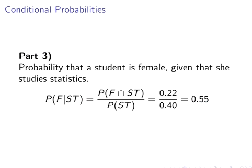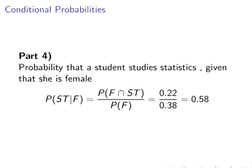Probability that a student is female given that she studies statistics. So the numerator, probability of F and ST, that is 0.22. And the probability of a student studying statistics is 0.40. So 0.22 divided by 0.40, just a bit of calculator work, we get an answer of 0.55. Again, we're going to make a quick note of that. We're going to remind ourselves of that when we get to part four, that the answer there is 0.55. Moving on.